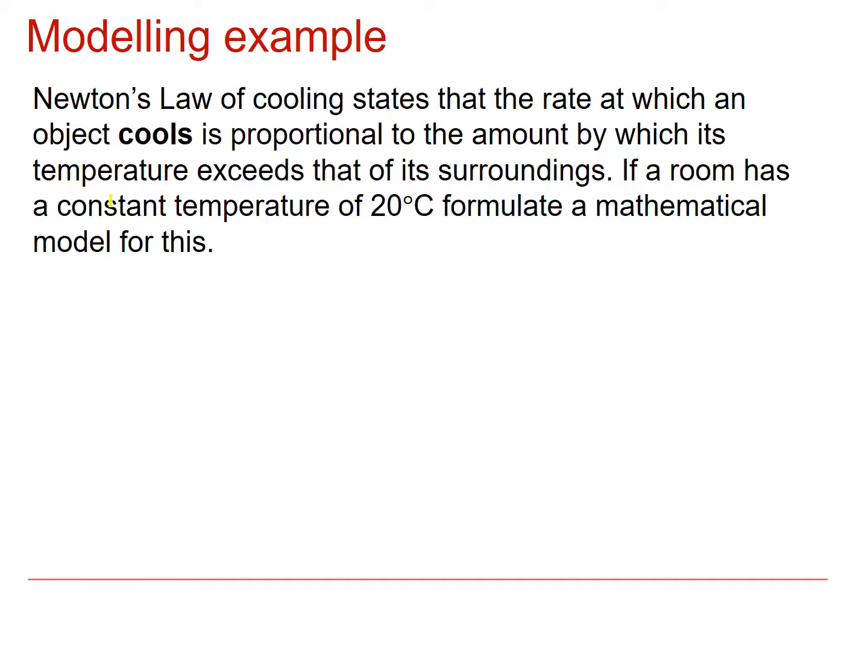Let's have a look at a modelling example then. We know that Newton's law of cooling states that the rate at which an object cools is proportional to the amount by which its temperature exceeds that of its surroundings. And so if a room has a constant temperature of 20 degrees C, formulate a mathematical model for this.